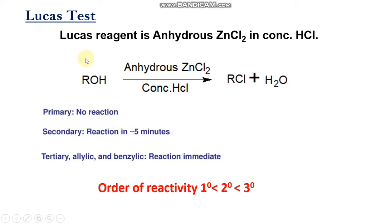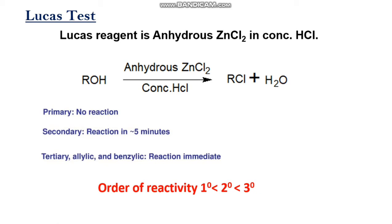The three types of alcohols undergo this reaction at different rates. When alcohol is reacted with the Lucas reagent, there is a formation of alkyl chloride. Tertiary alcohols react with Lucas reagent very rapidly. Secondary alcohols react somewhat slower. Primary alcohols do not react with Lucas reagent at room temperature.